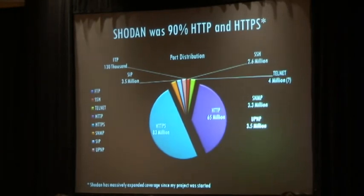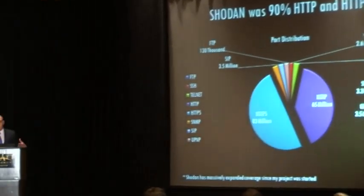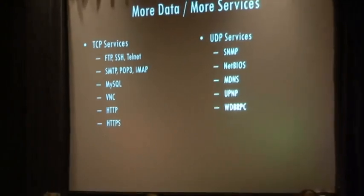Recently when I looked at Shodan, it was 90% HTTP and HTTPS — that's it. That's great if you want to look at web servers, but if you're looking at UPnP devices, embedded servers, home devices, routers and things like that, you don't get good data from just web scanning. So I wanted to start looking at things like MDNS and UPnP, VNC, MySQL, and similar services.